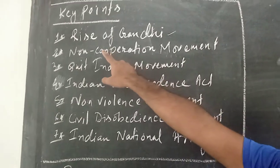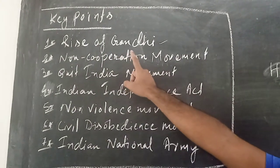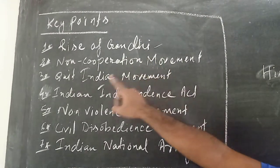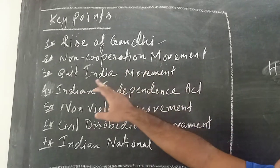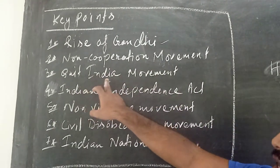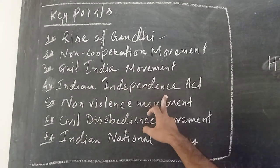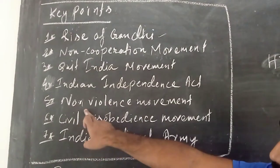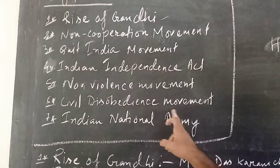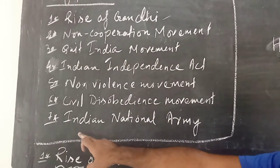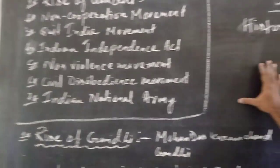The first key point we will study is Rise of Gandhi. About Mahatma Gandhi we will study here. Next key point is Non-Cooperation Movement. Third one is Quit India Movement. Fourth one is Indian Independence Act. Fifth is Non-Violence Movement. Sixth is Civil Disobedience Movement. And seventh is Indian National Army. So these are the key points we are going to study in this lesson.